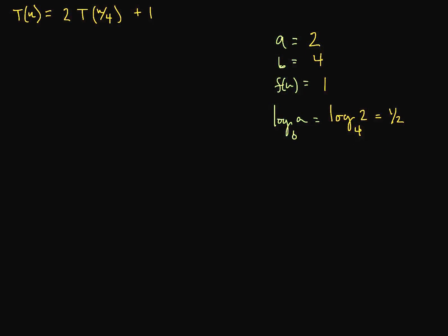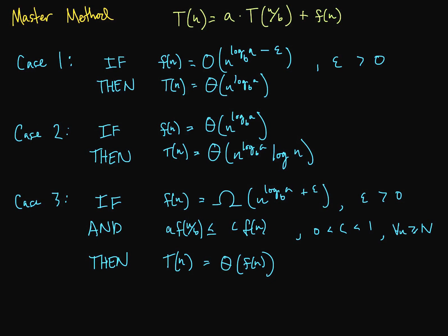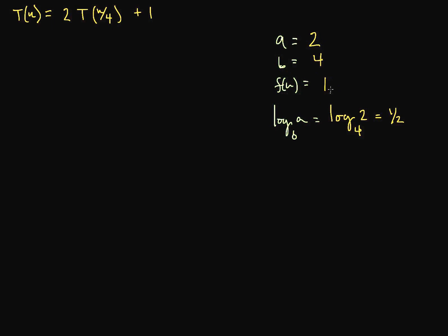We look at whether f(n) is Big-O, Big-Omega, or Big-Theta of something. The easy one here is Case 1. We're checking whether f(n) is less than or equal to some constant m times n to the log base b of a minus some positive epsilon, for all n greater than or equal to some n₀.